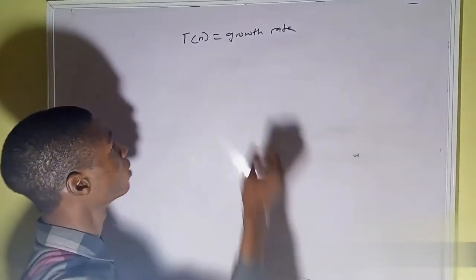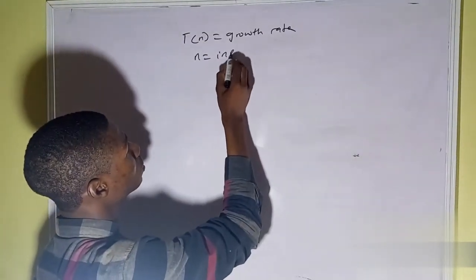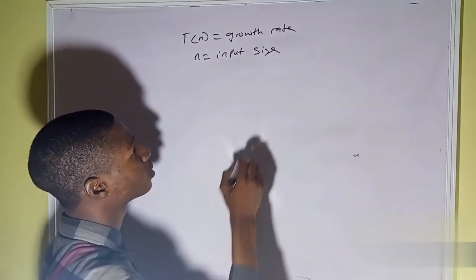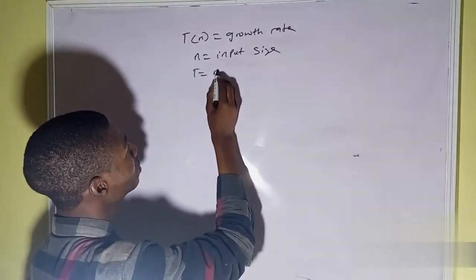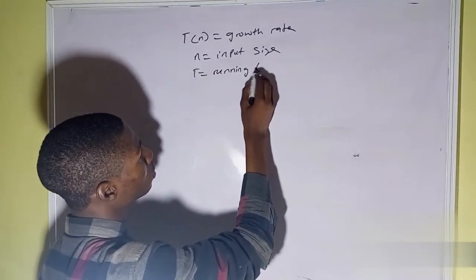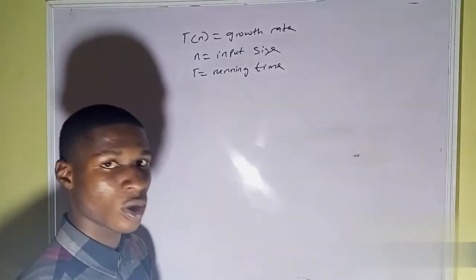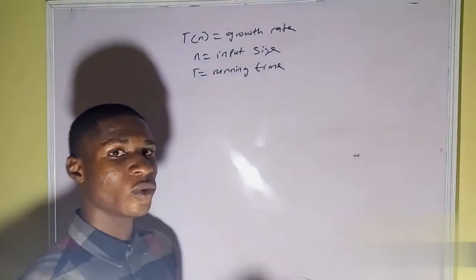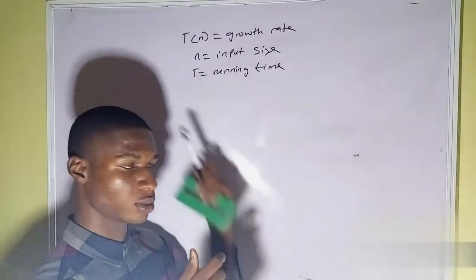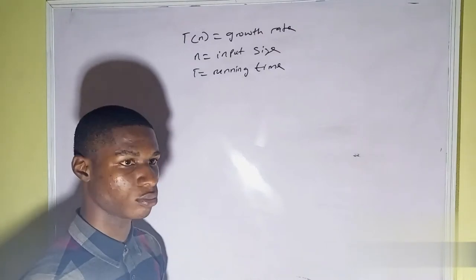Where n equals the input size and T is the running time for that particular algorithm. Let me give you an example so you can understand how we use the T of n function to derive the running time.